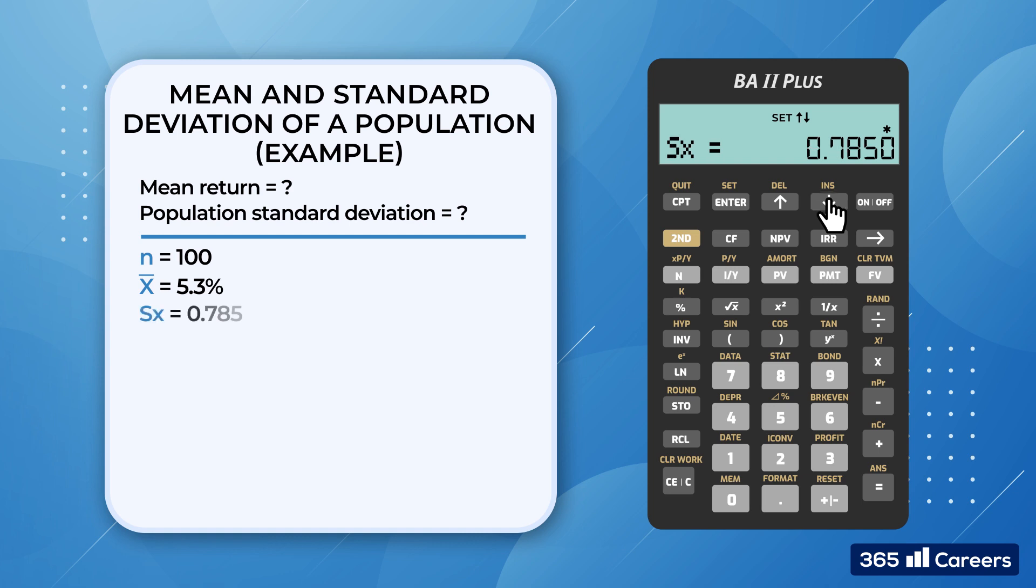Then we scroll down further to the sample deviation, sx, which is equal to 0.785. Then we scroll down further to obtain the population standard deviation, sigma x. As you can see, it is lower because the formula for calculating population standard deviation uses n in the denominator instead of n minus 1. If the problem asks for the population variance, we press the x-squared key to obtain it.